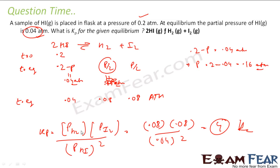And what will be the unit? See, this is atm, this is atm, so atm into atm by atm square. There is no unit. It's cancelled. So it is unitless.